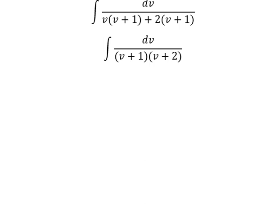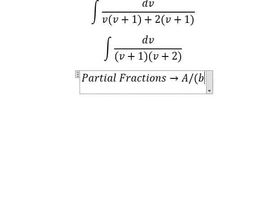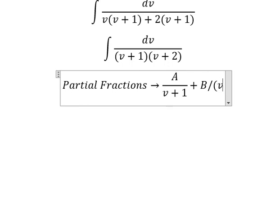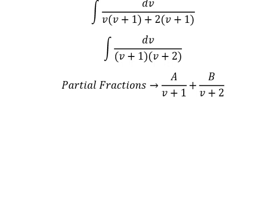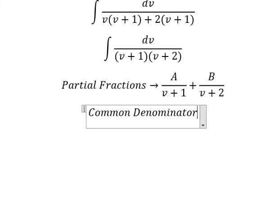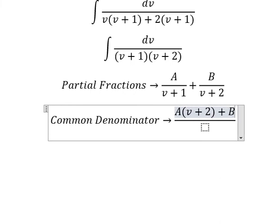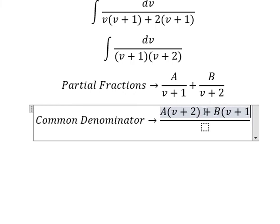And now we can use about partial fractions. So capital A over v plus 1, capital B over v plus 2. Now we do common denominator.